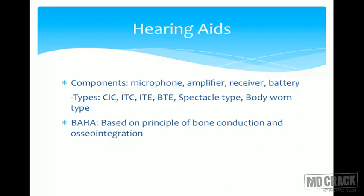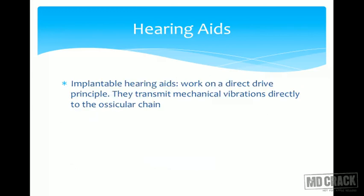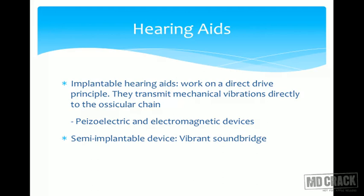BAHA (bone-anchored hearing aid) is based on the principle of bone conduction vibration and osseointegration. It has three parts: a titanium fixture, a titanium abutment, and a sound processor. The indication for BAHA is unilateral conductive hearing loss — 'unilateral' is important. Other upcoming hearing aids are implantable hearing aids working on the direct-drive principle, transmitting mechanical vibrations directly to the ossicular chain via piezoelectric or electromagnetic mechanisms. Semi-implantable devices such as the Vibrant Soundbridge are for moderate to severe sensorineural hearing loss.